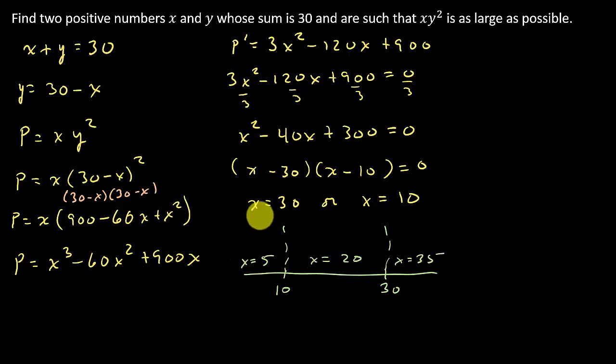So we take each of these numbers and plug them back into the derivative. Let's plug them back into this part here that's factored because we don't care about the exact number we get. All we care about is, is it positive or negative? So let's look at this. If I plug the 5 in,